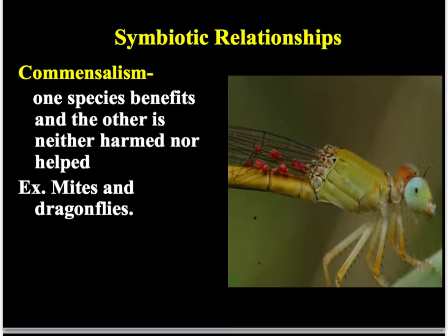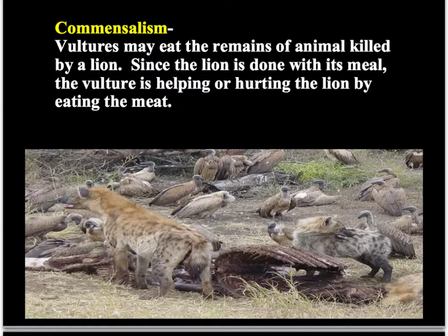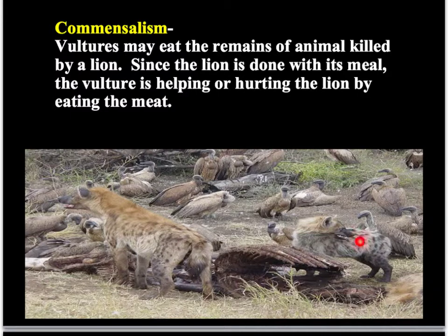Here's another example of commensalism. This is a dragonfly, and those tiny red dots in its wings are mites. The mites can't get around very well, so they hop on the back of the dragonfly and it takes them from one place to another — the dragonfly is kind of like a taxi. Also, these vultures and hyenas eat the remains of dead animals left by a lion. They're not hurting or helping the lion, so that's commensalism — they benefit and the lion is unaffected.